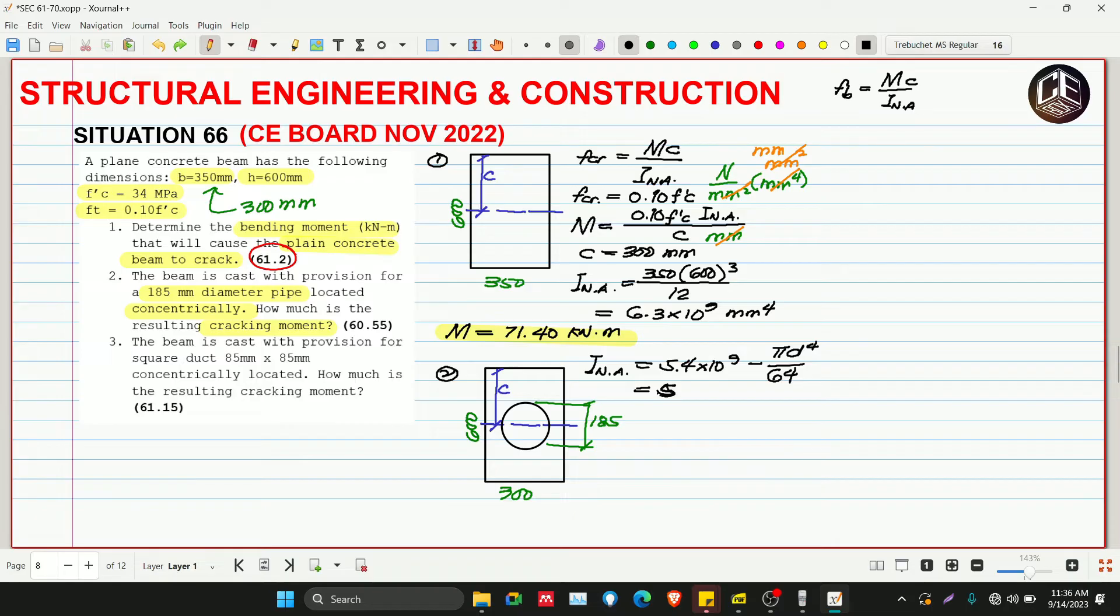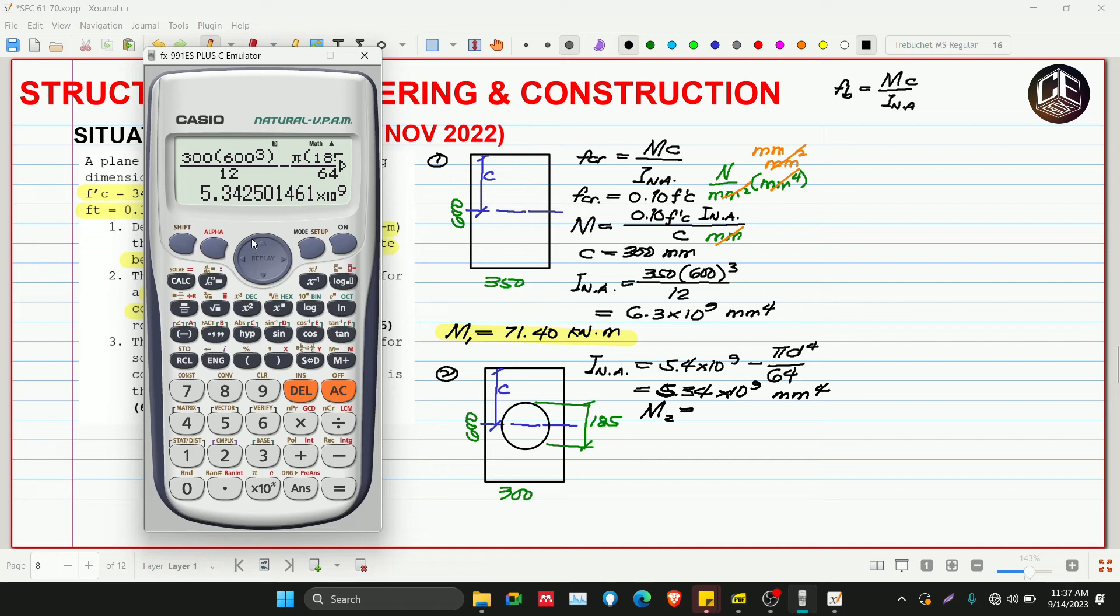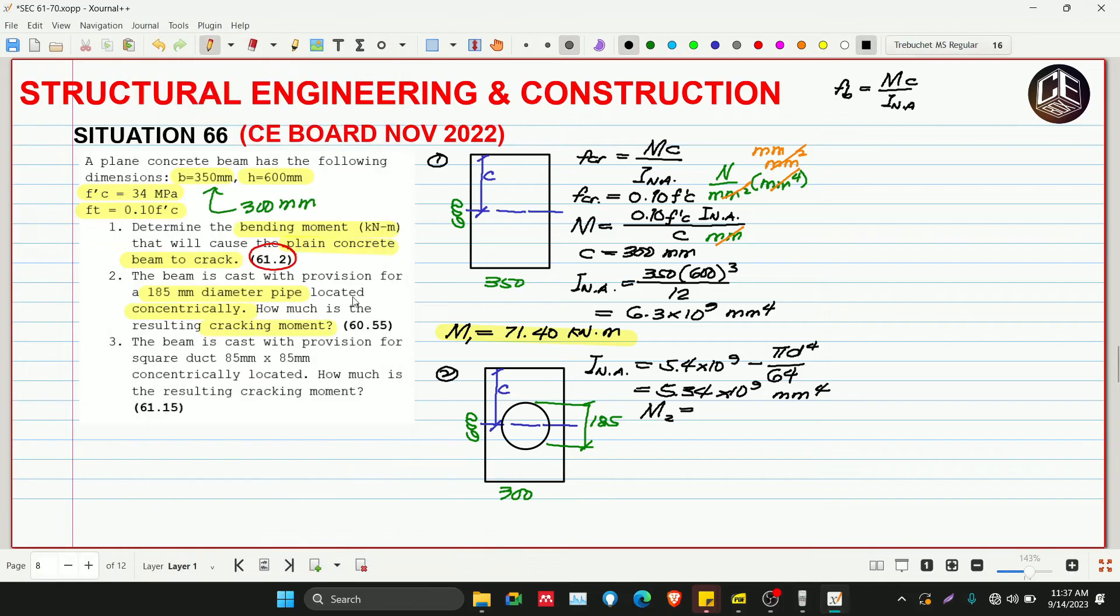This is 5.4 minus pi, our diameter is 185, raised to 4 divided by 64. That's 5.34 times 10 raised to 9 millimeter to the fourth. Substitute into the equation - C won't change, C is still half of 600. M2 is point 10 of F prime C multiplied by 5.34 times 10 raised to 9 over 300, divided by 1000 squared. The answer is 60.52 or 60.55 kilonewton meter.